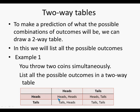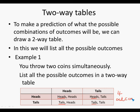If the first coin lands on heads, the other coin can either land on heads or tails. When the first coin lands on tails, the second coin can either be heads or tails. So the outcomes are: heads-heads, heads-tails, tails-heads, or tails-tails. There are four different outcomes when you flip two coins simultaneously, or equivalently, when you flip a coin twice.